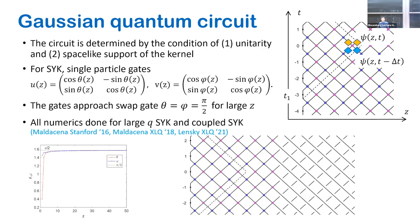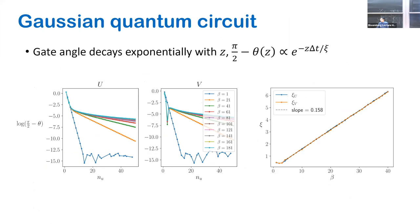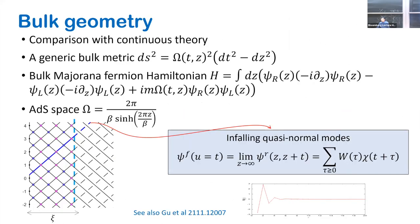A question was raised: since your bulk is time-independent, you're only constructing the region outside the horizon. Yes, in the same way we can only do the causal wedge. This is showing the eternal decay, and because after crossing some depth the evolution is almost trivial, even in numerics or finite size we can actually track what that horizon mode is — it just stays out forever.